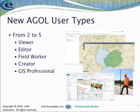Going forward with the update coming in December, Esri is going to add several new user types — going from two user types to five. This is going to provide more flexibility to your organization and the capabilities of those users. The viewer and creator roles are still there and basically the same, but they're adding an editor, a field worker, and a GIS professional to the mix.